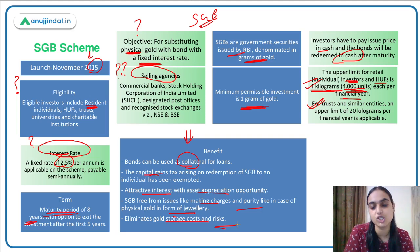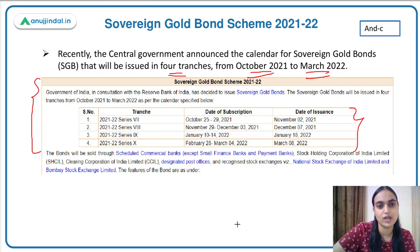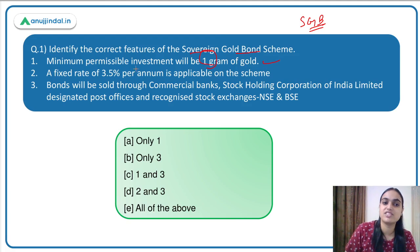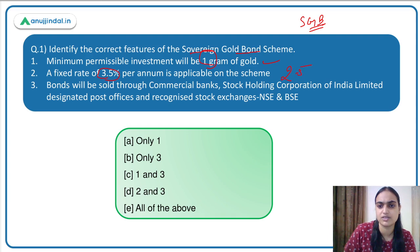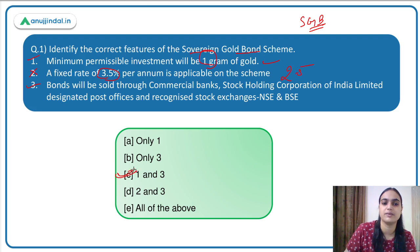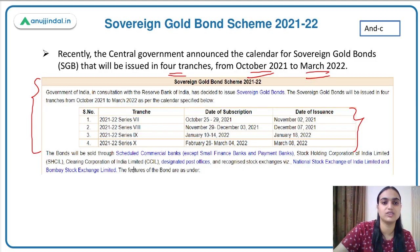Coming back to Question 1: we have to identify the correct features of the scheme. The minimum investment of one gram is correct. The fixed rate of 3.5% is incorrect — it's 2.5%. Bonds can be sold through commercial banks, Stock Holding Corporation, BSE, NSE, and designated post offices — this is correct. So the first and third statements are correct, making the answer Option C.